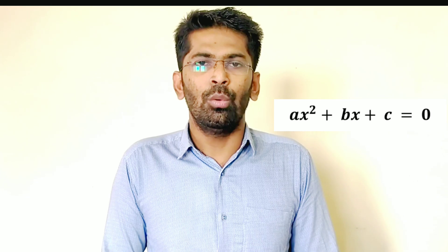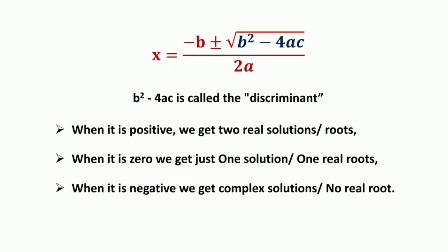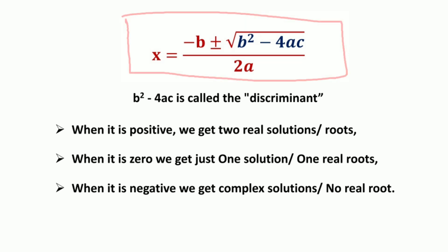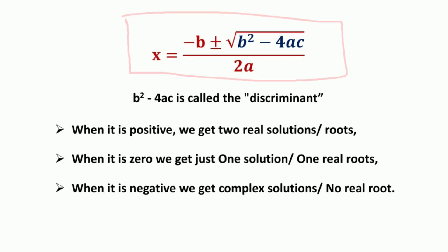Upon knowing those values we can substitute them into the quadratic formula and solve for the value of variable x. After an equation has been rearranged to the standard quadratic form ax² + bx + c = 0, we can solve it by means of the quadratic formula: x = (−b ± √(b² − 4ac)) / 2a.